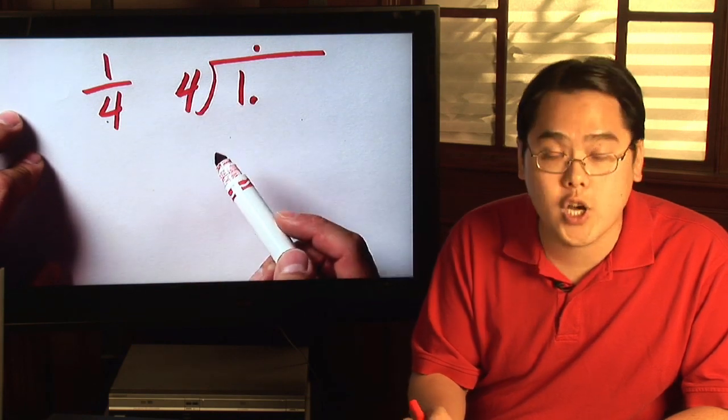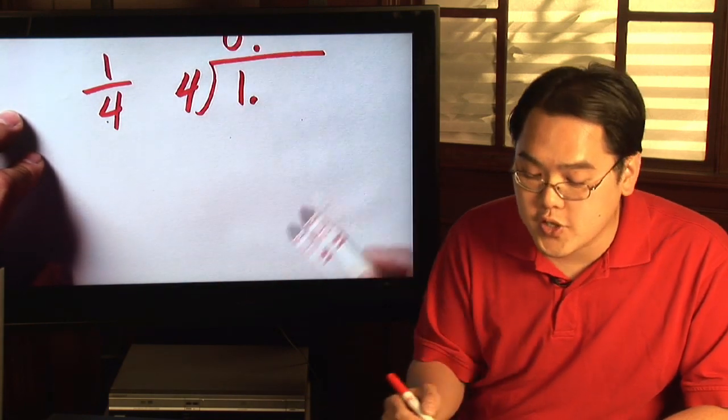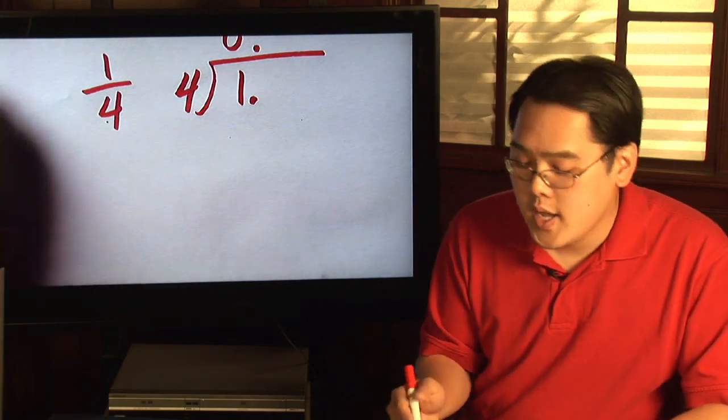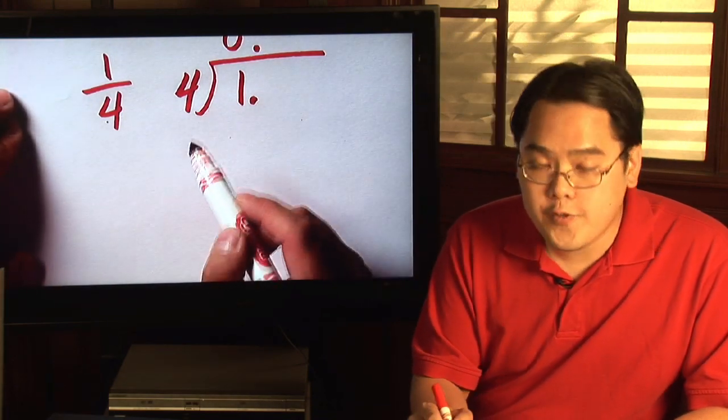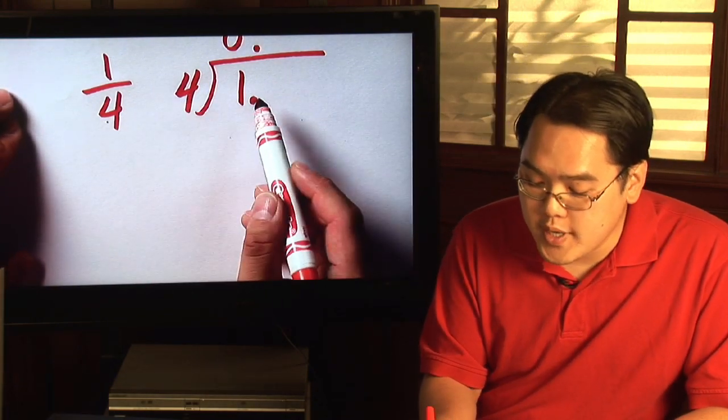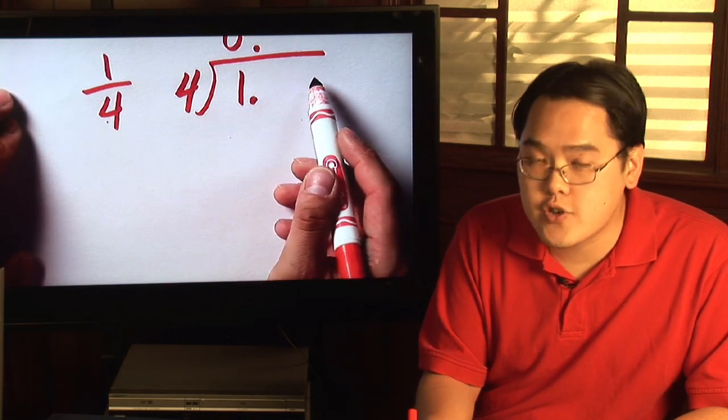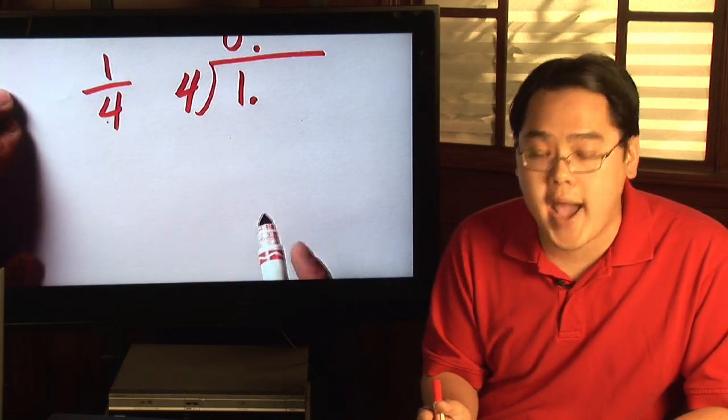Since you know four does not go into one, you know there's going to be a zero. So we know it's going to be zero point something. Now, to figure out the exact value, you put in as many zeros as you need to underneath until you get the answer or if you see a pattern.